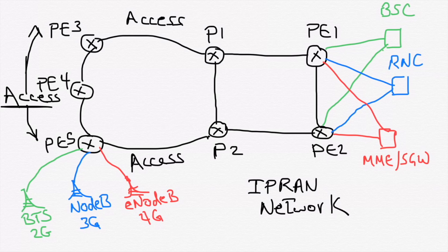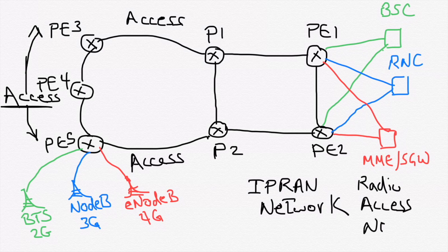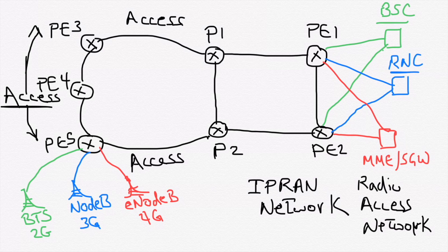For more explanation, we have this example of an IPRAN network. IPRAN stands for IP Radio Access Network. The RAN network has different components and service nodes. In the core, it has PSC (Base Station Controller), which handles 2G traffic, and RNC, which handles and controls 3G traffic.